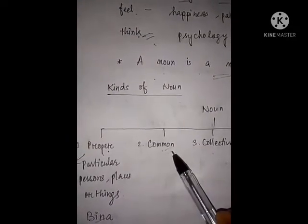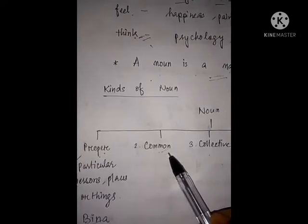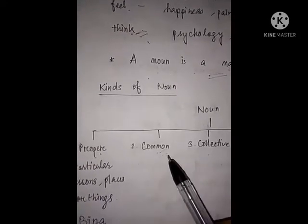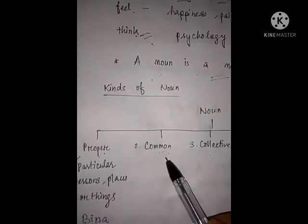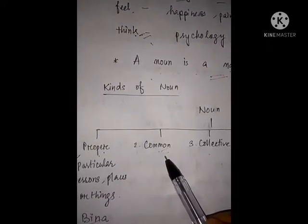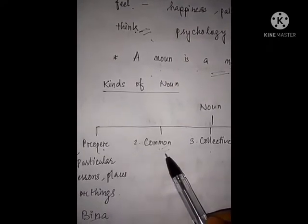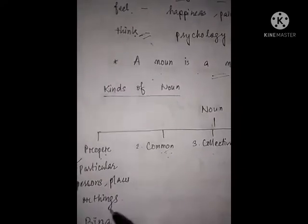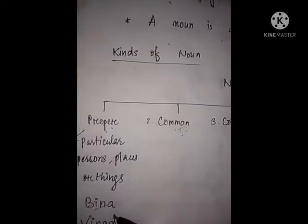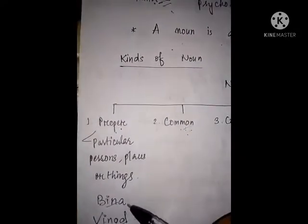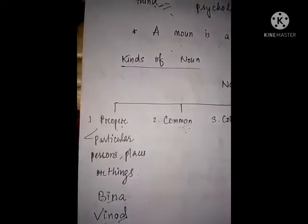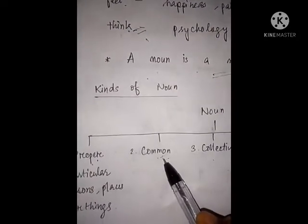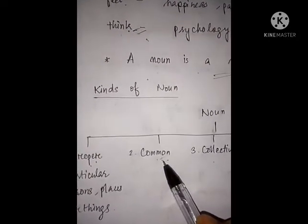What is common noun? Common nouns are the nouns which do not point out any particular person, place, or thing, but are common to all persons or things of the same class or kind. A common noun is not like Bena — because these are names of two particular persons. But a common noun does not indicate a particular person, thing, or place.